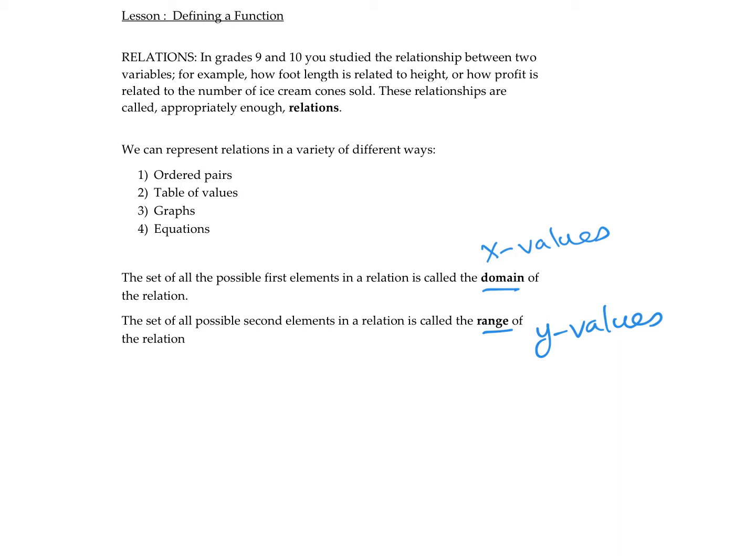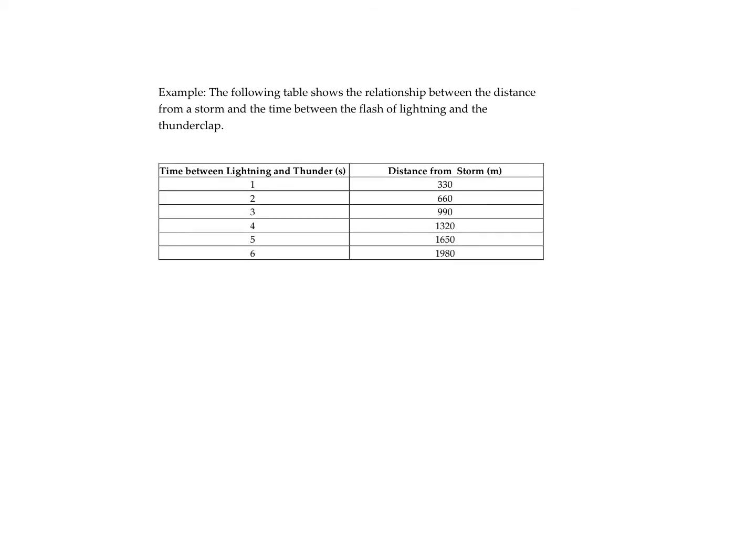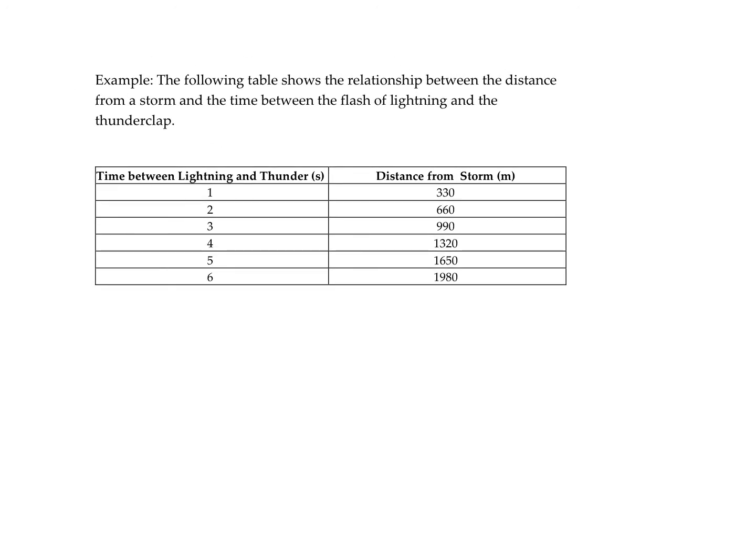Here's an example of a relationship. We have the distance from a storm. This is my independent value, or my x value, and time between the flash of lightning. The x value is time. This is my independent variable. And then distance is my y, and that is dependent on time elapsed. That is my dependent variable.